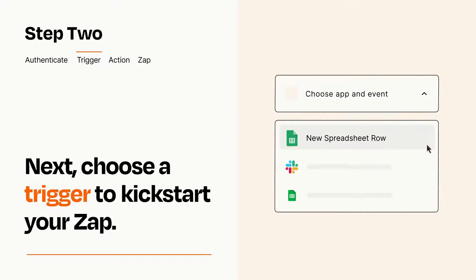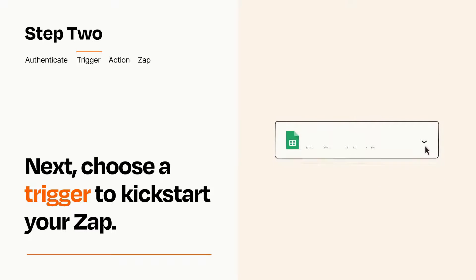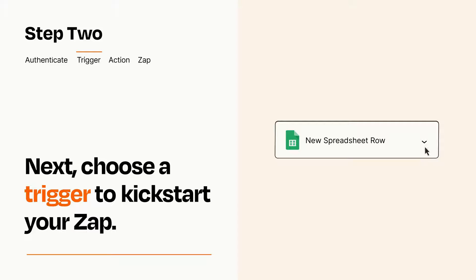Now let's set up your trigger, which is the event that starts your Zap. Pick the trigger event that you want from the list. When you set up this step, your Zap will pull in test data from your trigger app, that you'll see later when setting up your action app.